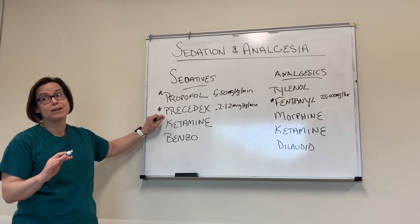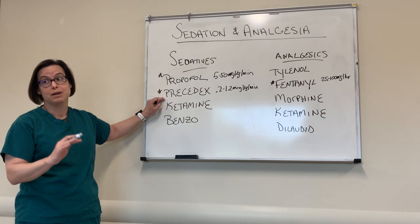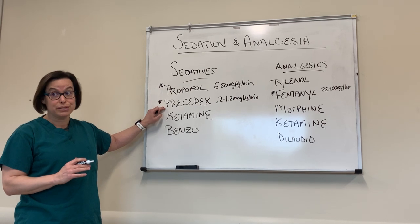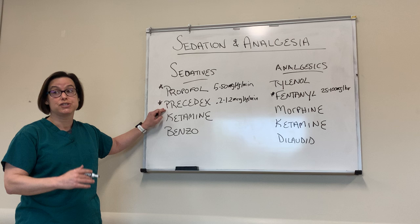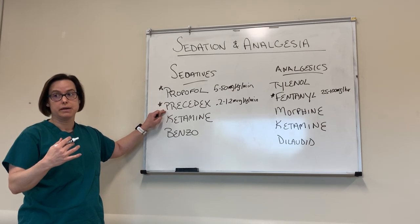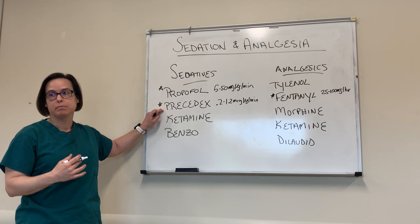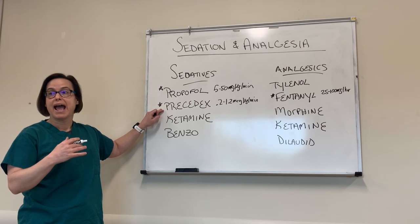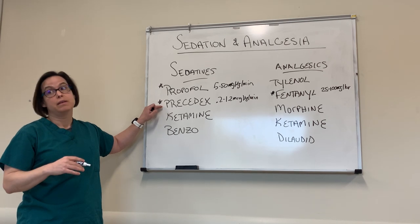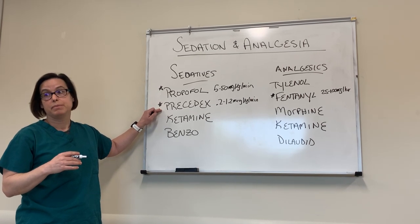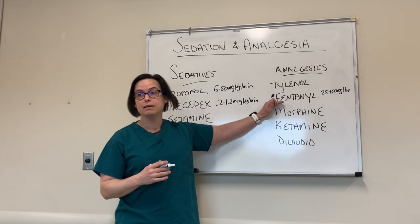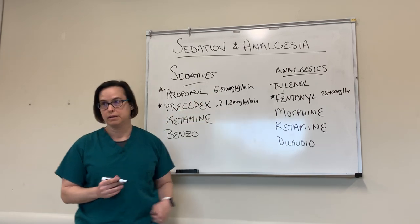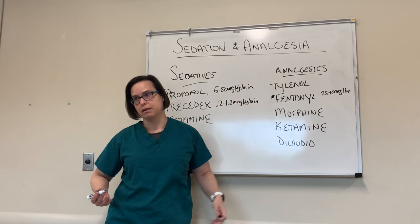Precedex, or dexmedetomidine — some people just call it dex. Downsides here: it can cause both hypotension and hypertension depending on the scenario. The thing I've seen that's really scary is that patients get bradycardic — I've actually seen someone go asystolic from it. So if I have someone whose heart rate is in the 50–60 range, I'm not going to reach for the Precedex. But in general, before — with either of these plus fentanyl on top — I would have been happy. Tylenol is sort of our standing order for everybody.